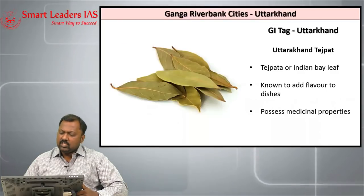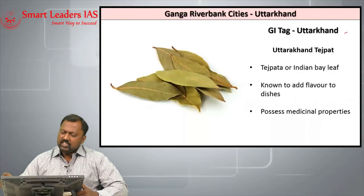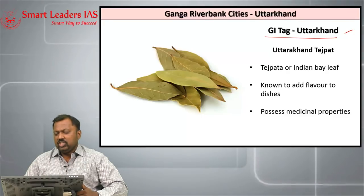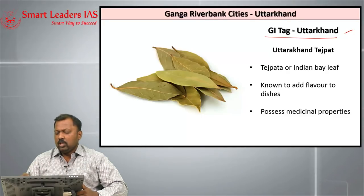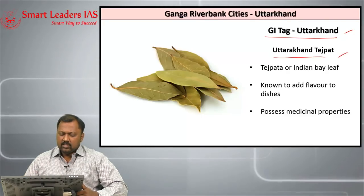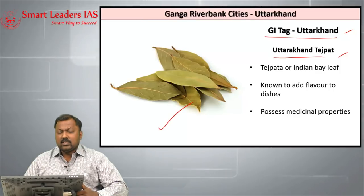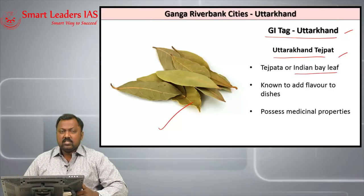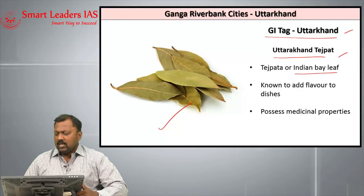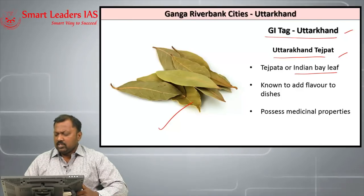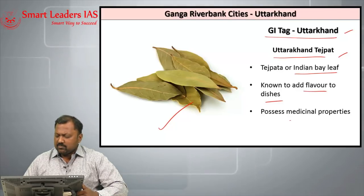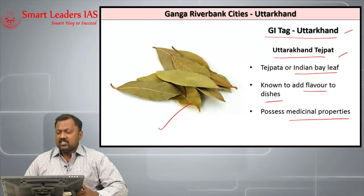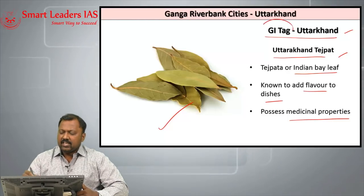Let us understand a GI tag associated with Uttarakhand. In Uttarakhand we have a GI tag product called Uttarakhand Tejpat, which is an Indian bay leaf. This leaf is added in cooking and not only gives flavour but also possesses medicinal properties, and it is because of this that this leaf has been given a GI tag.